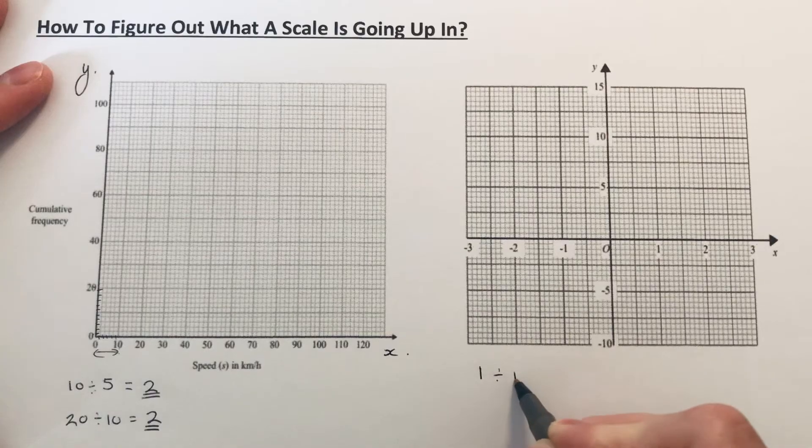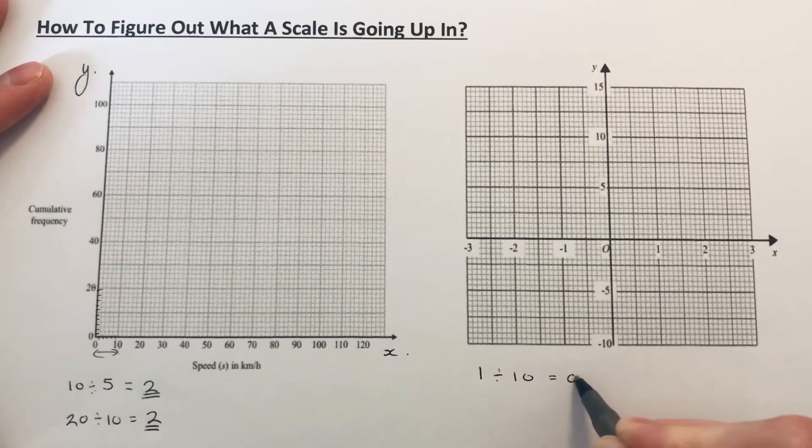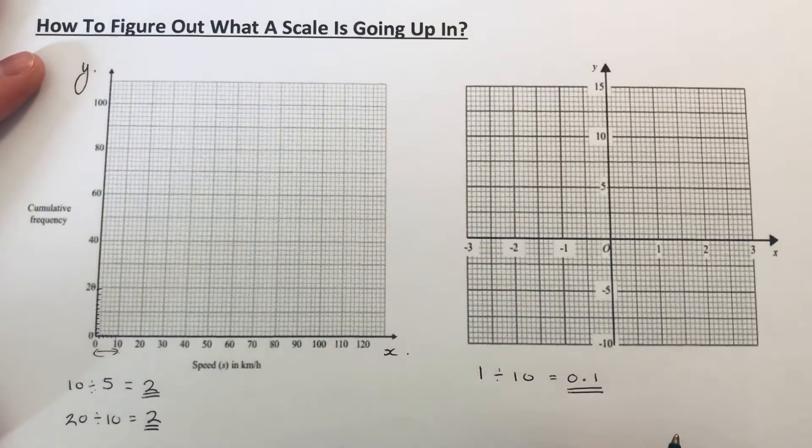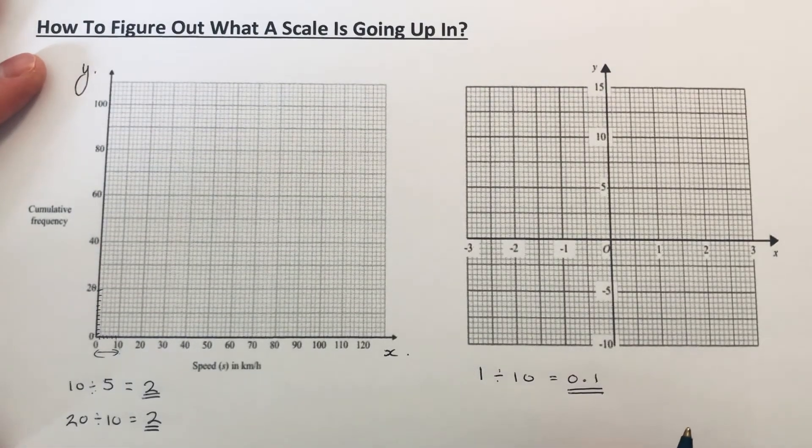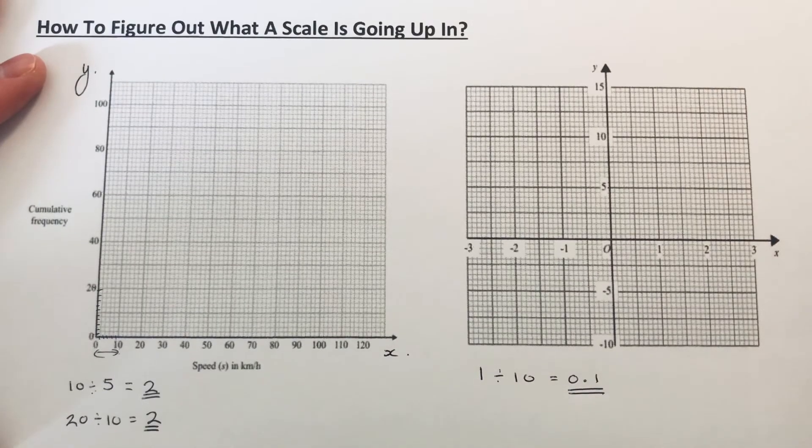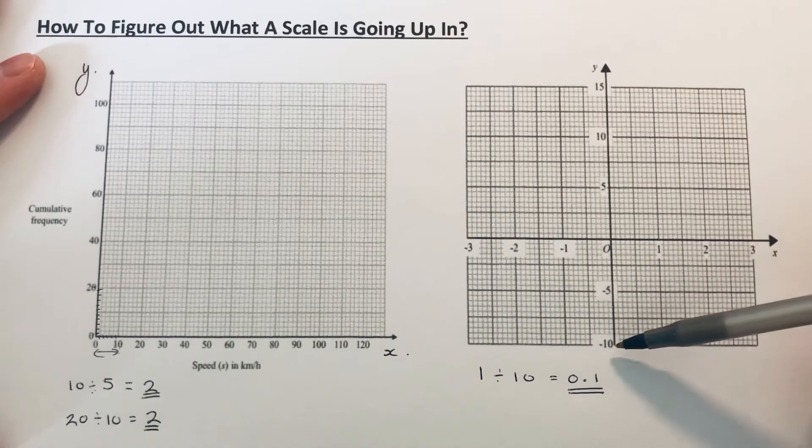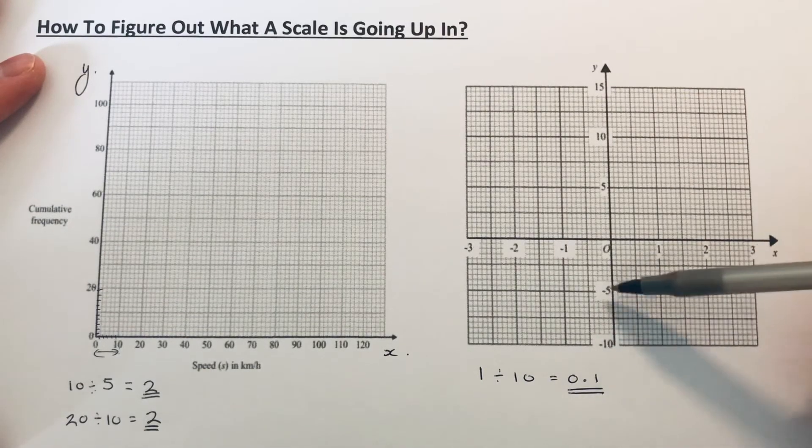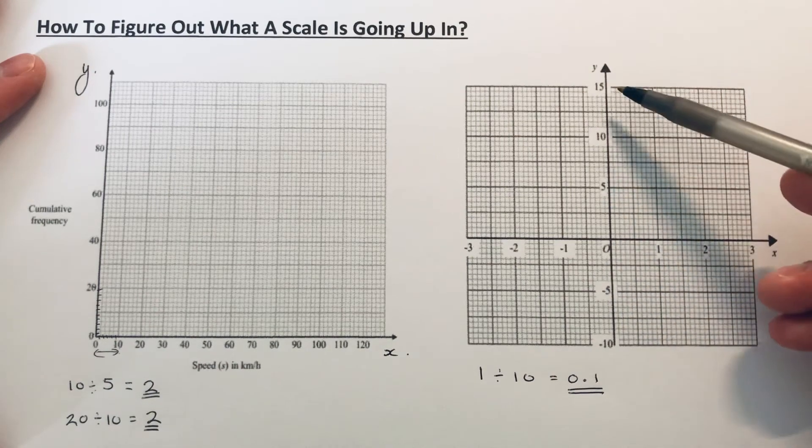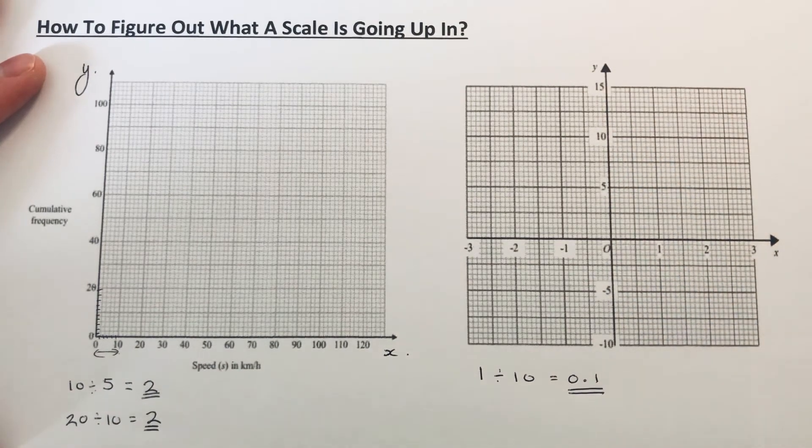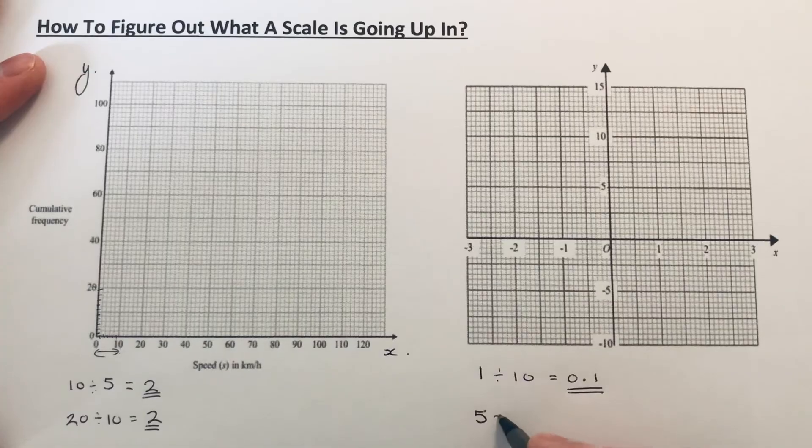Which is zero point one, so every little square on our x-axis is zero point one. Let's figure out the scale on the y-axis next. If you look at the numbers on the y-axis: minus ten, minus five, zero, five, ten, fifteen, that is going up in fives.